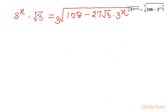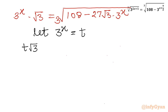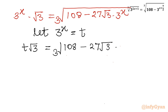Now let us use substitution. I will write: let 3 power x equal to t. So the left hand side becomes t root 3, or root 3 times t, equal to cube root of 108 minus 27 root 3 times t.